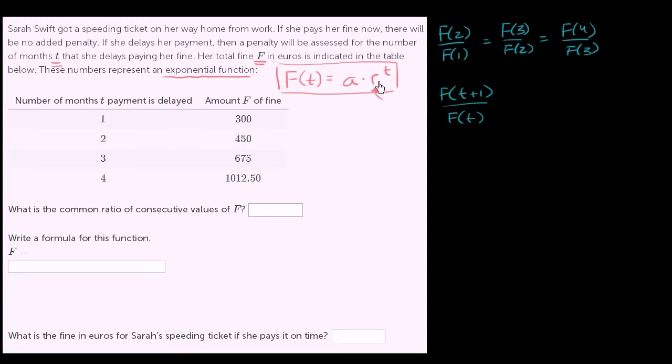Let's see what that is. If we just look at the form, what's the ratio of f of two to f of one? 450 divided by 300, well that's 1.5. 675 divided by 450, that's 1.5. 1,012.5 divided by 675, that's 1.5. So the common ratio in all of these situations is 1.5.